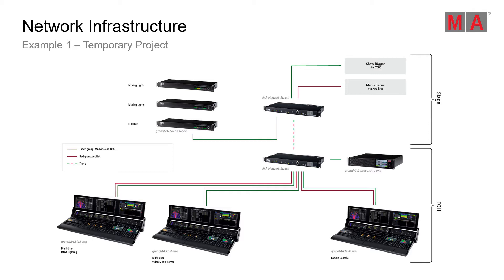On the right side, you can see a GrandMA3 processing unit, which enables additional parameters for our system — offering scalability to add more parameters as the system grows. We also have to transfer our network data to DMX, which the nodes on top of the system do, delivering the DMX signal for LED bars or moving lights. In the top right corner, you can see integration of incoming signals, like a show trigger via OSC or connecting an external media server with the ArtNet protocol.